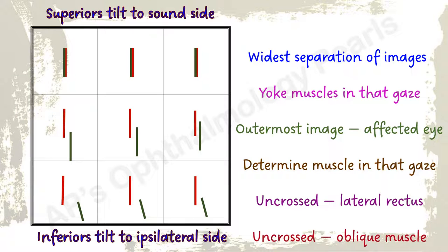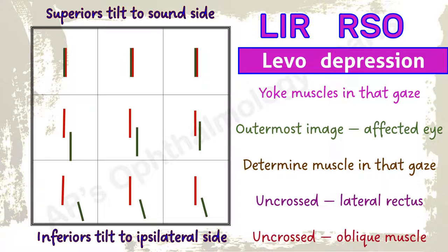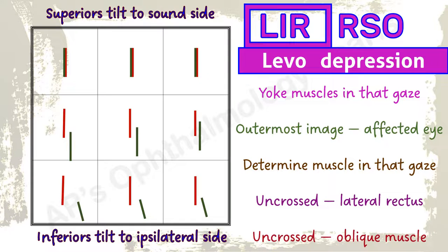Now let's see this. Maximum separation of images is in levo depression. The yoke muscles acting in levo depression are the left inferior rectus and the right superior oblique. Green is the outermost image, so the left eye is involved — this is a left inferior rectus palsy. This is a crossed diplopia, so the rectus checks out. The tilt is towards the left or ipsilateral side, so inferior checks out.